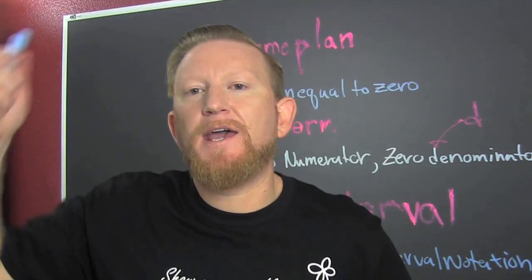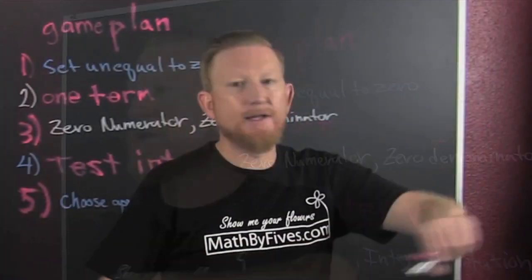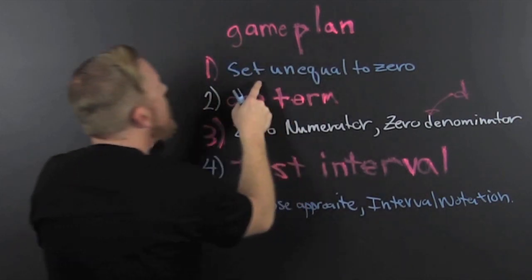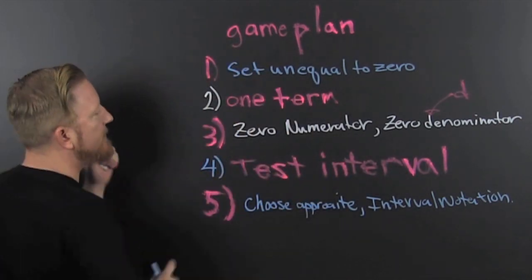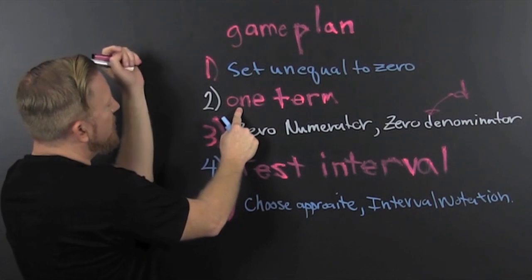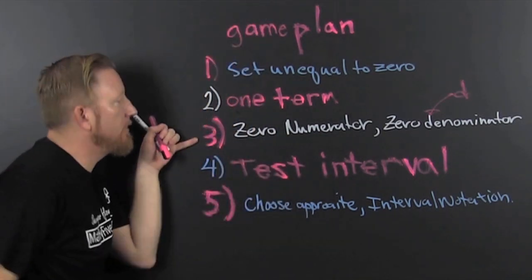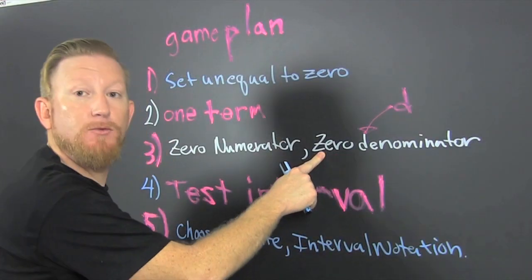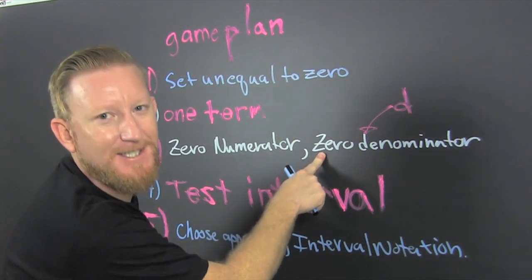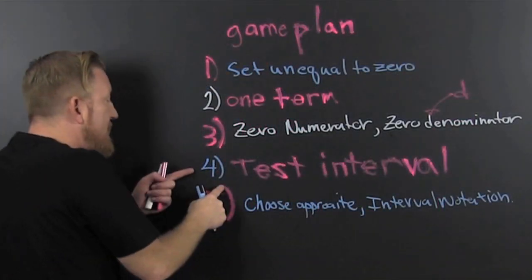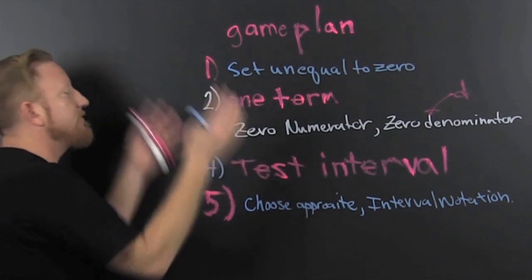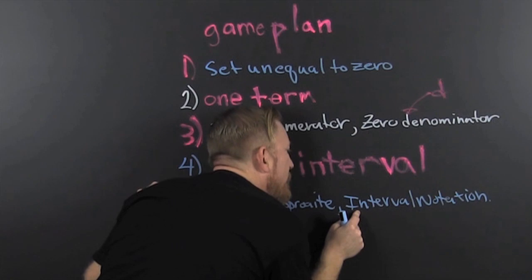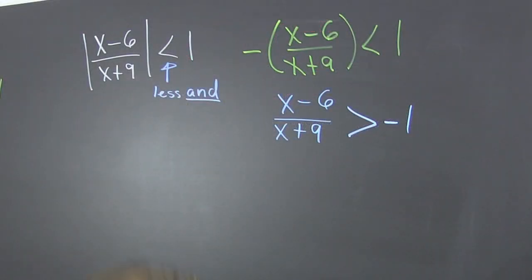The game plan for rational inequalities: we first want to set it equal to zero — back that math up — then we need to get the zeros of the numerator and the denominator. Then we're going to test the intervals in between the critical values, and choose the appropriate interval notation.